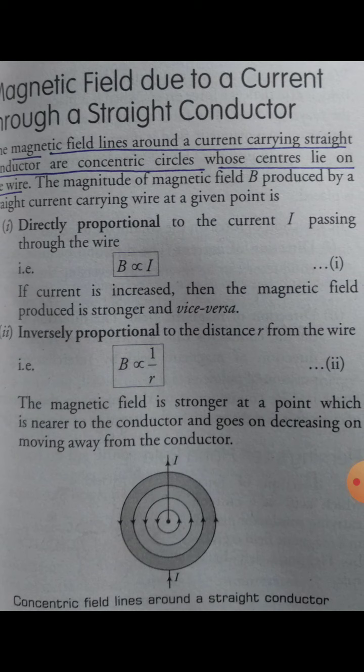B is directly proportional to capital I — the current passing through the wire is directly proportional to the magnetic field it produces. If current increases, the magnetic field becomes stronger; if current decreases, the magnetic field becomes weaker. Increasing the current makes the magnetic field strong enough to attract magnetic objects towards the wire.